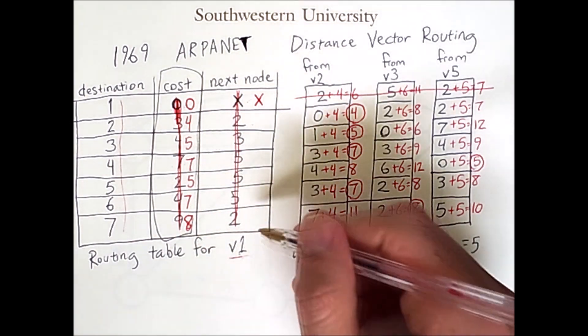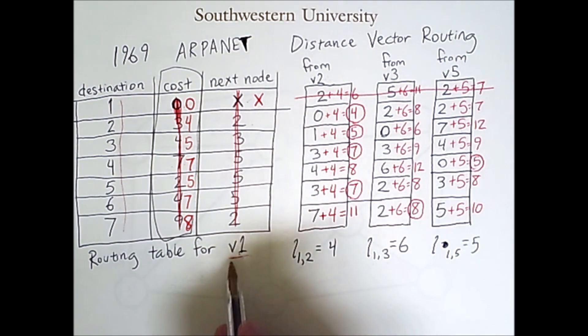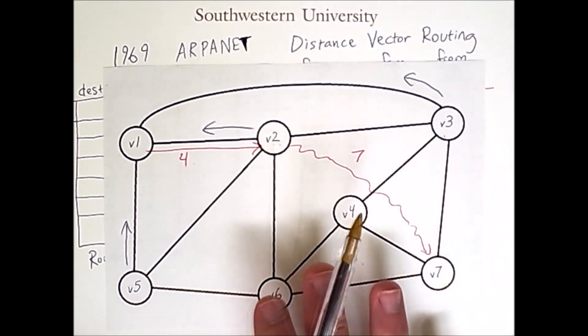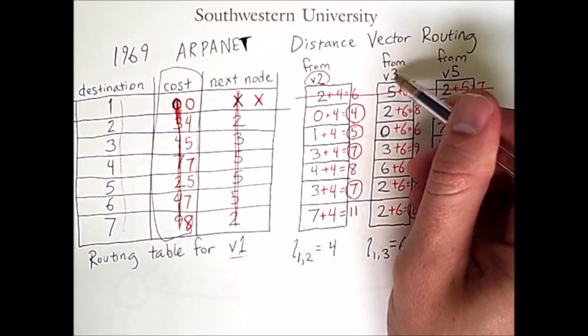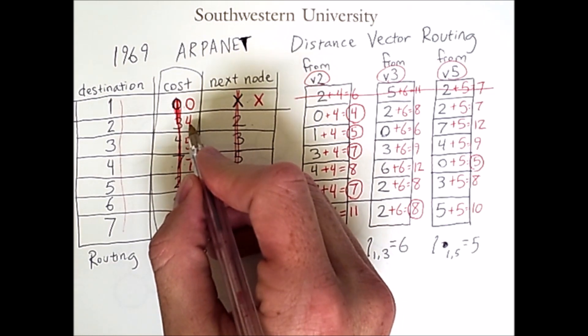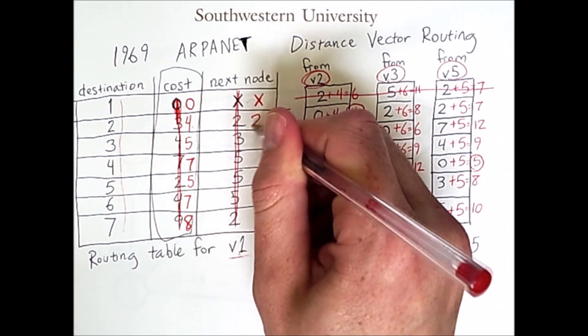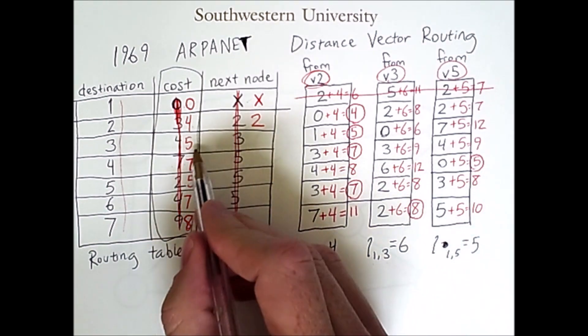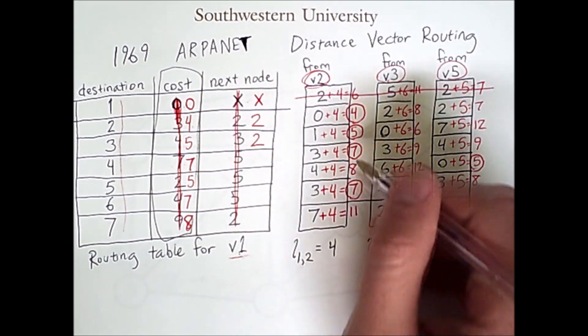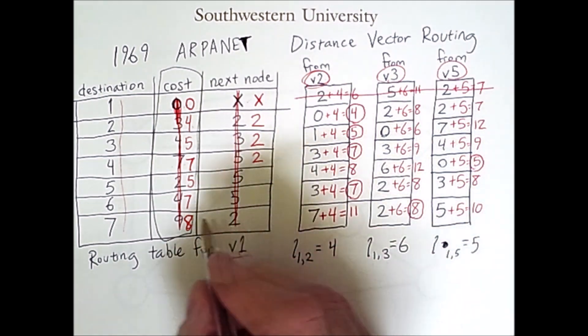Now, as before, we need to fill out the next node column. And the next node will always be a neighboring node of V1, which once again, from this, we see the neighbors are 5, 2, and 3, which we also knew because those are sources of these distance vectors. So in this row, because the lowest cost came from sending to V2, 2 is the next node we will send to. Here, the lowest cost came from V2 as well, so this will be a 2. Here, the cost of 7 came from sending to V2, so we'll put a 2 here. Then in the next row, the lowest cost results from sending the packet to V5. So we'll put a 5 here.